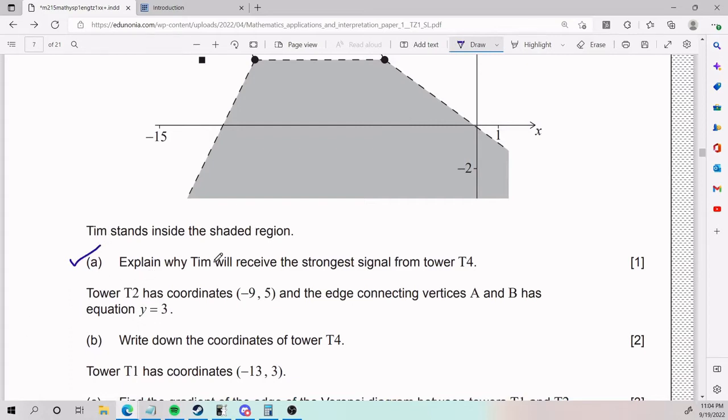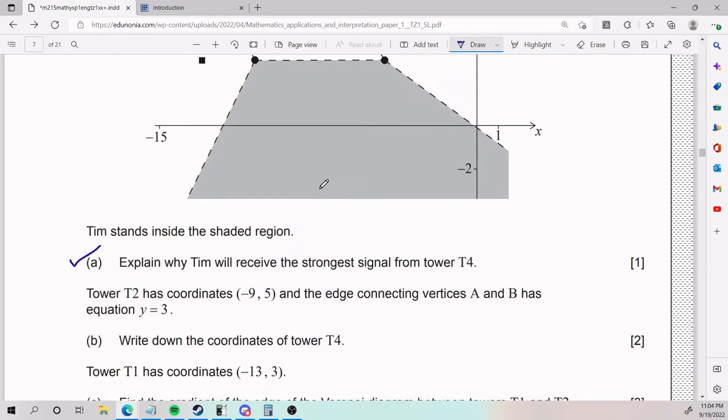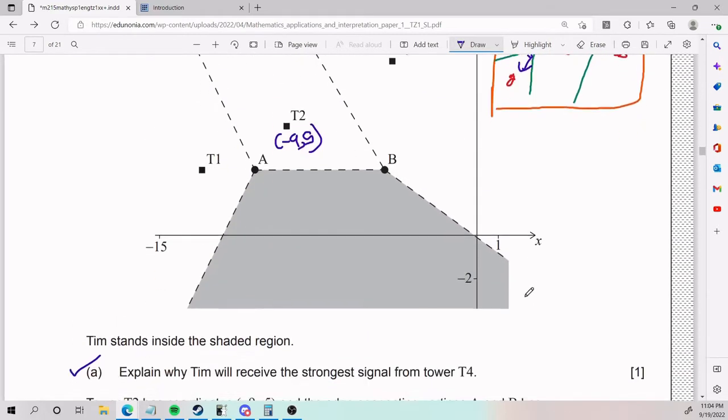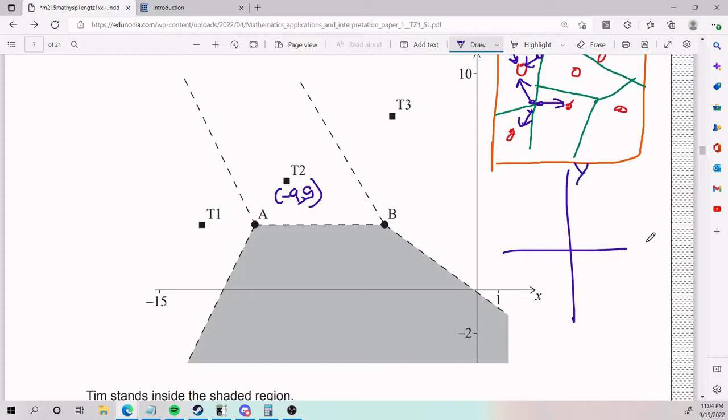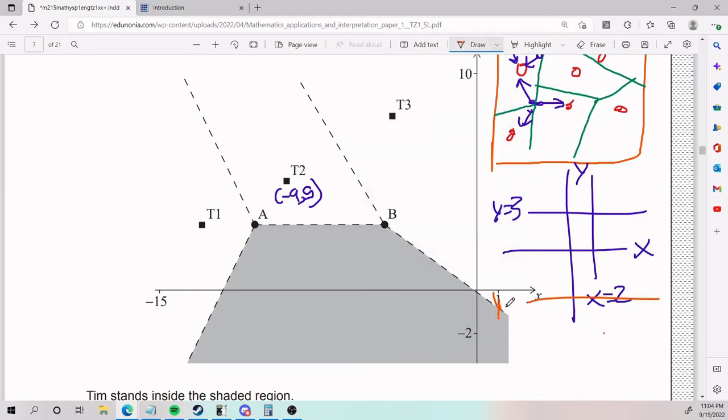For part B, they tell us tower T2 has coordinates negative 9, 5. And the edge connecting vertices A and B has equation Y equals 3. So equation Y equals 3, if you take a coordinate plane or whatever, Y equals 3 is here. If I take X equals 2, X equals 2 is here. That is what they mean by Y equals 3 and X equals 2. If I say Y equals negative 4, where would that be? Y equals negative 4 would be down here.